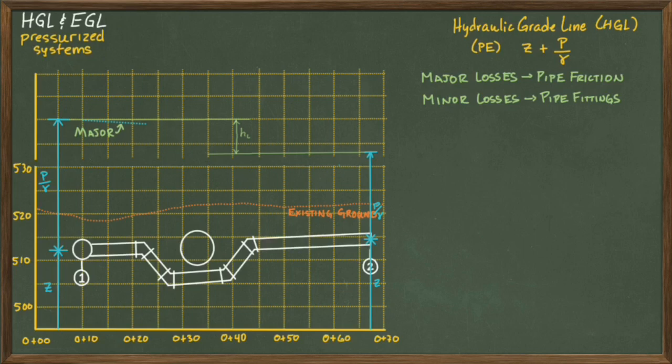And then where there are fittings or changes in direction in the pipeline, we represent that with a vertical line going down to show the minor losses. We complete the HGL by filling in the rest of the major losses and minor losses as shown here.